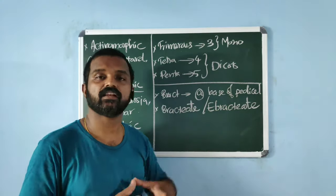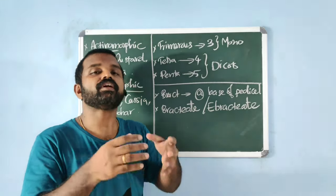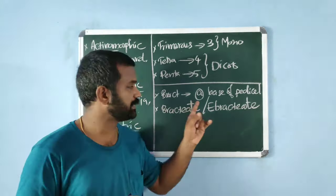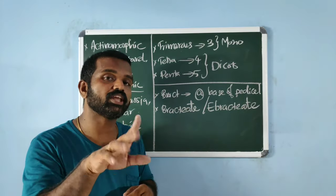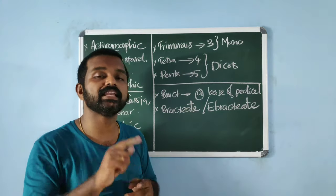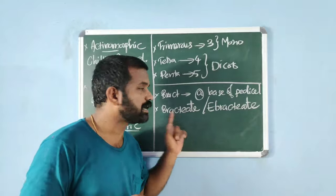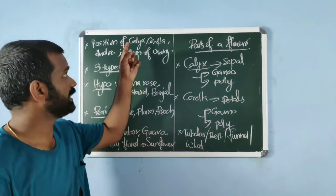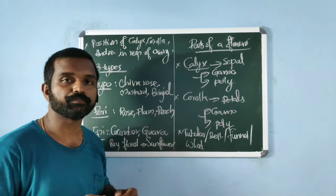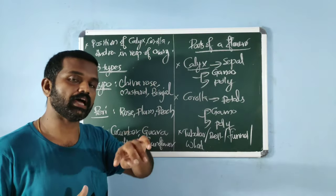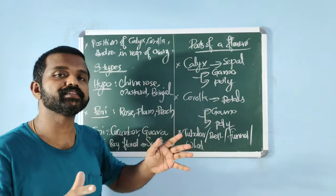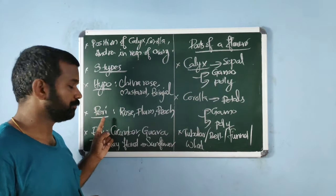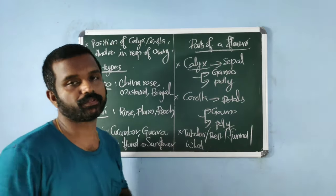A bract is a reduced leaf seen at the base of the pedicel. A flower with a bract is bracteate; without a bract is ebracteate. In our syllabus, the plant family Liliaceae is an example of ebracteate. Based on the position of calyx, corolla, and androecium with respect to the ovary and thalamus, flowers are categorized into three: hypogynous, perigynous, and epigynous.